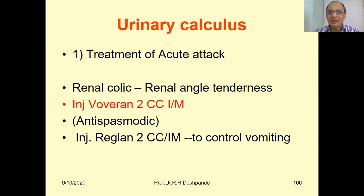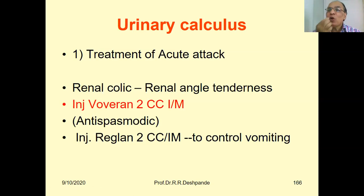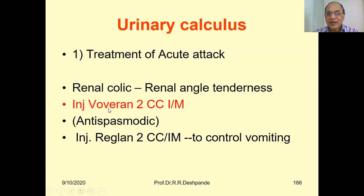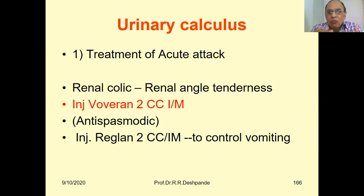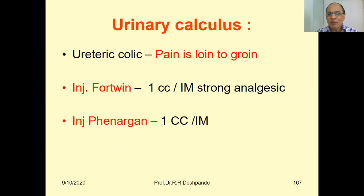For the acute attack you give analgesic injection, as pain is very severe and tablets take too long to act. Injection Ovon — diclofenac sodium, 2 cc intramuscular — is the analgesic. An anti-spasmodic injection cyclopam is also given. If there is vomiting with the renal colic attack, give injection Reglan 2 cc intramuscular to control the vomiting.